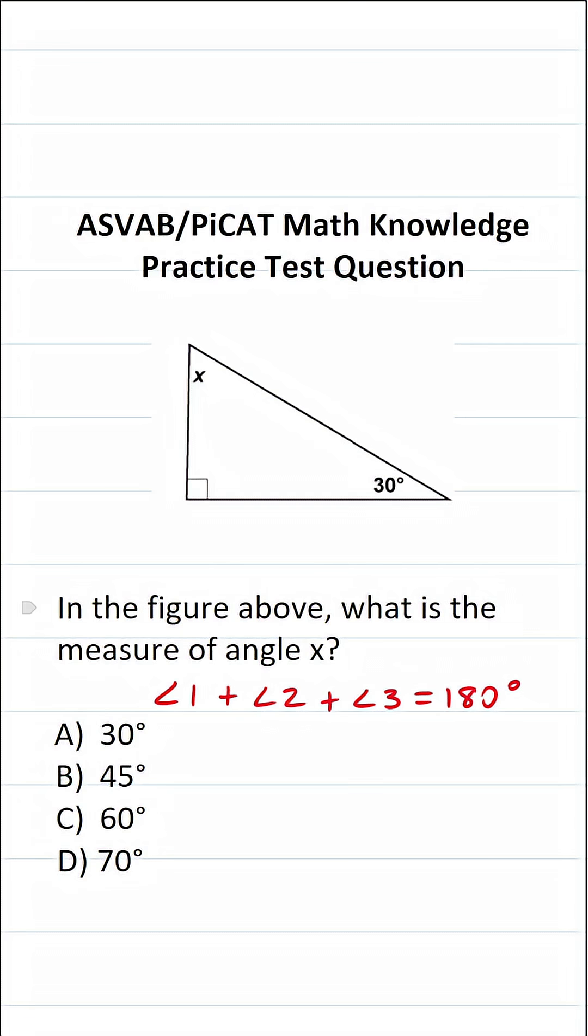Again, there are three angles in a triangle. So the measure of angle 1 plus the measure of angle 2 plus the measure of angle 3, in other words, will always equal 180 degrees.